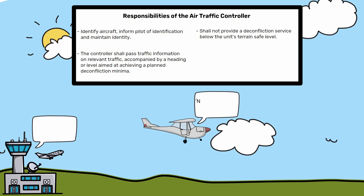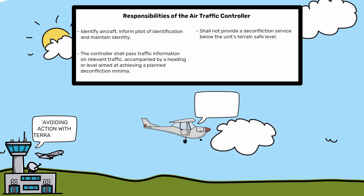If a pilot requests to descend below the terrain safe level, the controller should apply a traffic service and inform the pilot. If there is a risk of collision during an aircraft departure and the aircraft is below the terrain safe level, the controller shall provide an avoiding action with terrain alert.